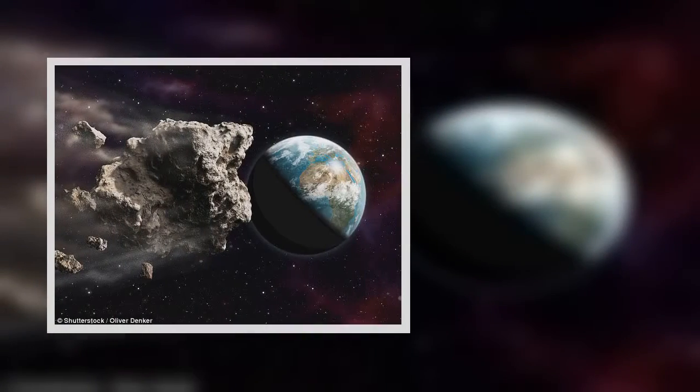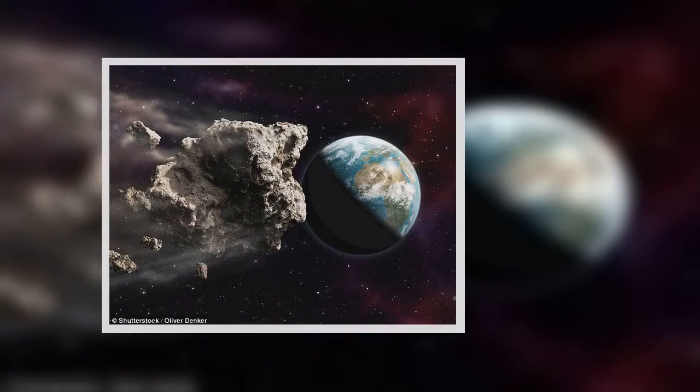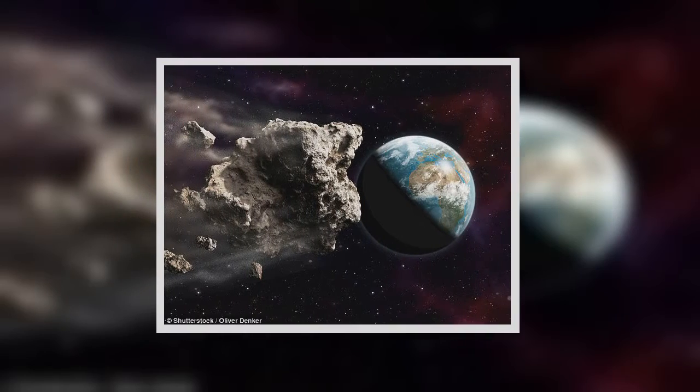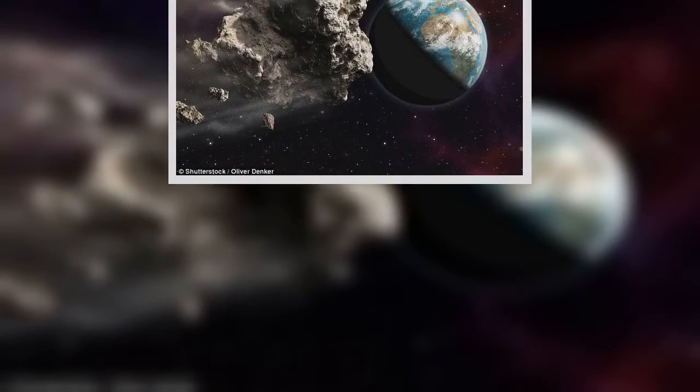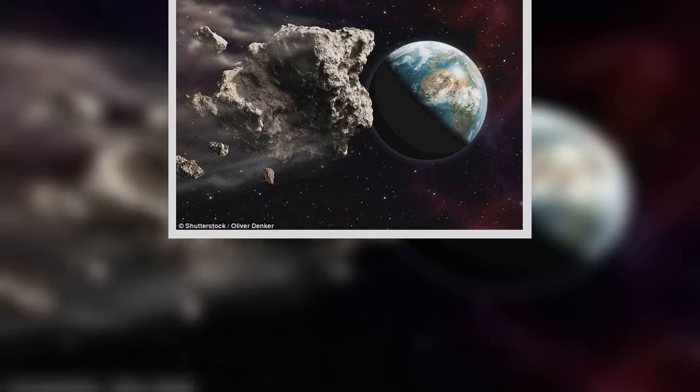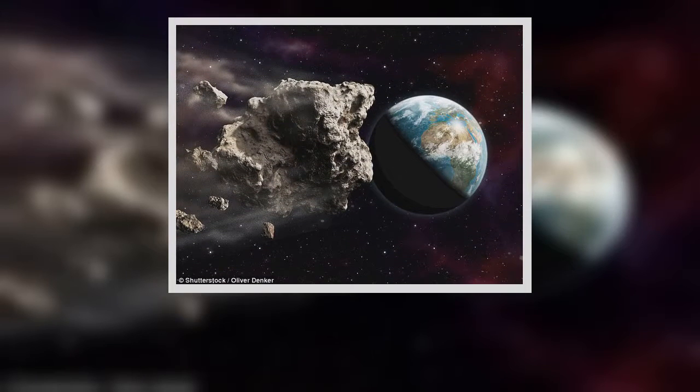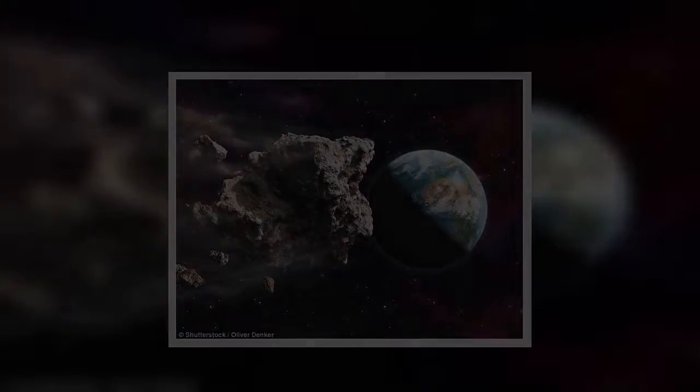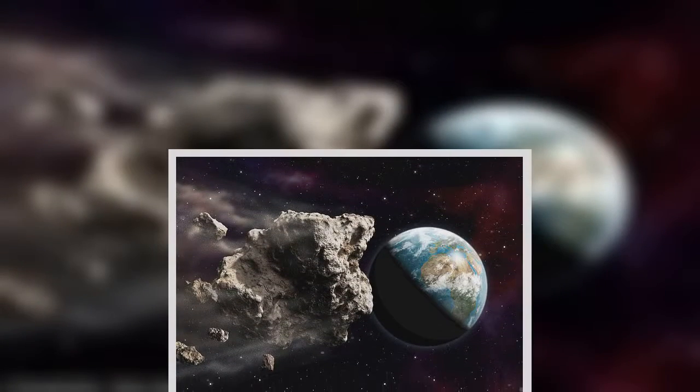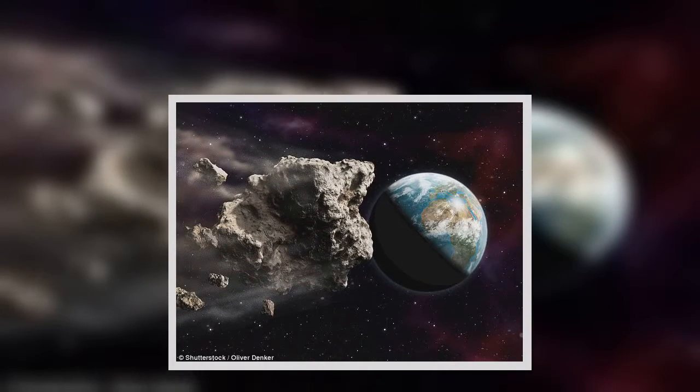Chelyabinsk and 2018 CB are relatively small objects in our solar system, part of a class called asteroids. When asteroids enter the atmosphere, they're called meteors, and if pieces reach the ground, those are called meteorites.